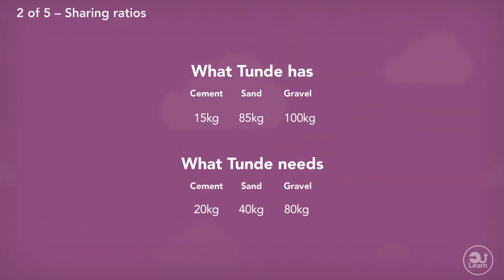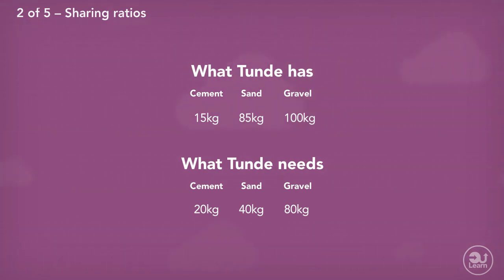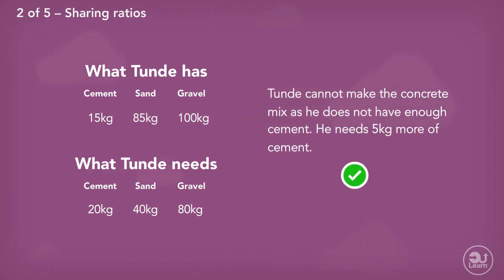Comparing these amounts with what Tunde has: Tunde needs 20 kilograms of cement but he only has 15 kilograms, which is not enough. He needs 40 kilograms of sand and he has 85 kilograms — even more than he needs. He needs 80 kilograms of gravel and he has 100 kilograms of gravel. So our final answer is that Tunde cannot make the concrete mix, as he does not have enough cement. He needs 5 kilograms more of cement.